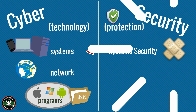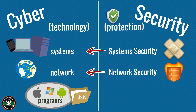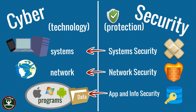When systems are protected, it is known as system security. Patching is an example of system security. When computer networks are protected, it is called network security. A firewall is one part of network security controls. When software programs are made secure, it is known as application security. When data is made secure, it is known as information security.